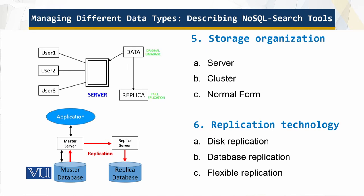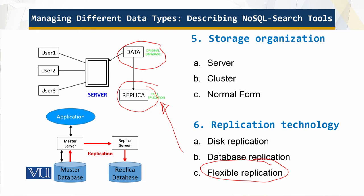Now for storage organization, we have a server with original data and full replication, as well as database replication. We can have disk replication also, but the more interesting point is flexible replication, which provides application-controlled replication of data between databases in different clusters. Updates may not arrive in the same order they were applied to the first database, and this typically involves some custom processing. Replication flows through the replica server into the replica database. These are the differences between disk replication, database replication, and flexible replication in the context of NoSQL.